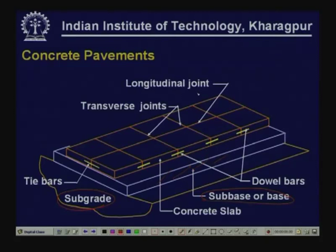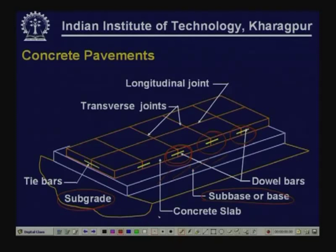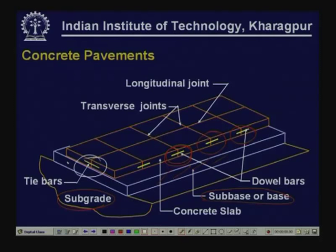The other components we see here are dowel bars — these are bars that connect adjacent slabs. We also see another bar known as tie bar; they have different functions which we will be discussing in the subsequent slides.